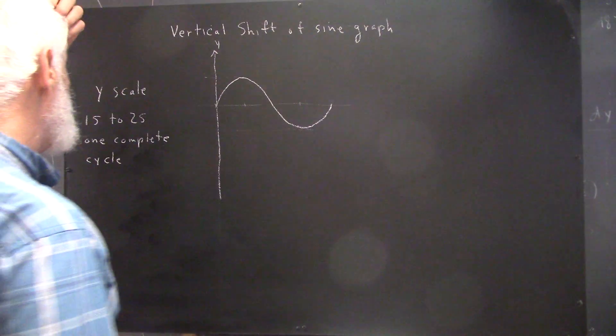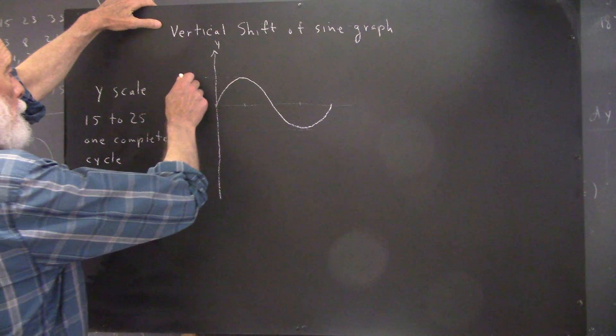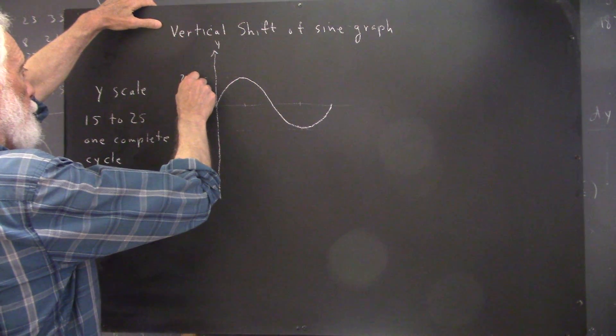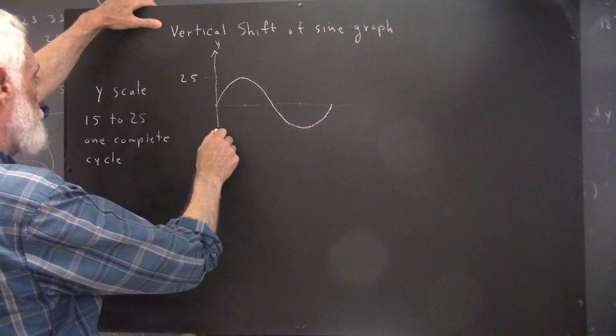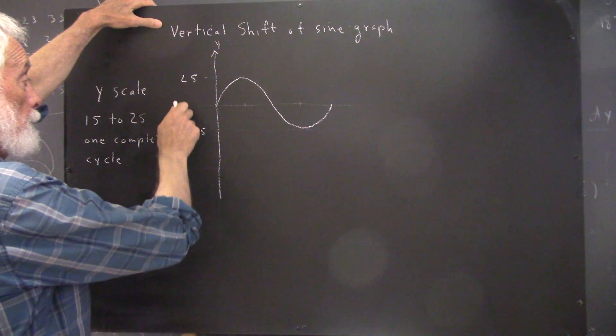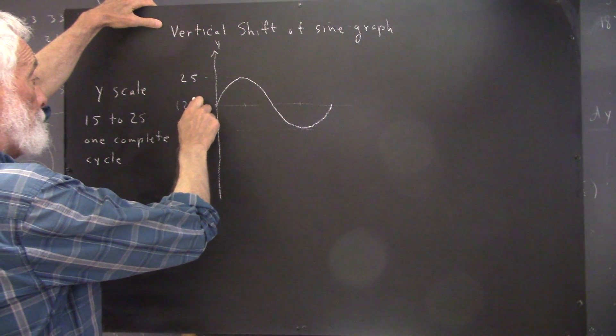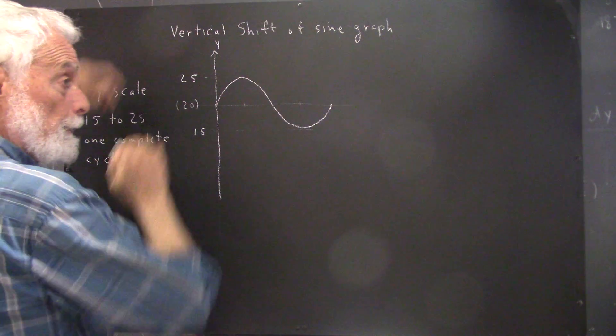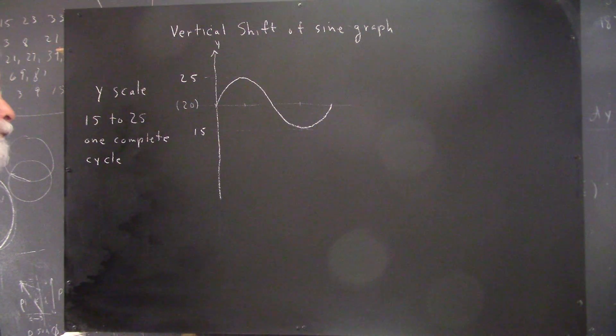Well, we can easily depict those quantities. Y is going to go from 15 to 25, meaning, of course, that this horizontal line here represents y equal to 20.